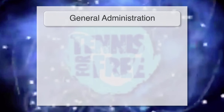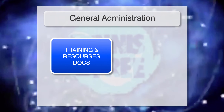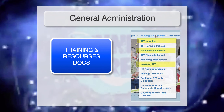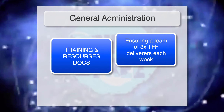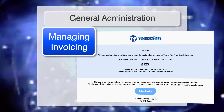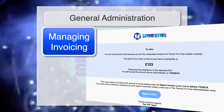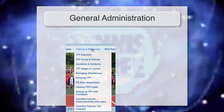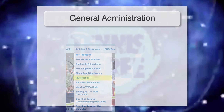Lastly, general administration. The training and resources documents on the website are important — particularly the TFF induction document, as well as resources on accidents and incidents, invoicing TFF, and CourtLine tutorials. Ensure you have a team of three TFF deliverers each week, and manage invoicing carefully. You'll receive an invoice at the end of the month to check, along with an attachment showing who's been paid. If there's an issue, reject the invoice within the given date and complete a manual invoice as per the training resources invoice TFF section.